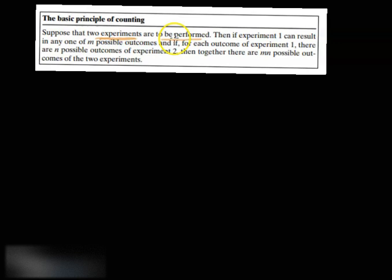People also state this in the following way. They say that suppose two experiments are to be performed — instead of two tasks, we use two experiments. If experiment 1 can result in any of M possible outcomes, and for each outcome of experiment 1 there are N possible outcomes of experiment 2, then together both experiments have M times N possible outcomes.